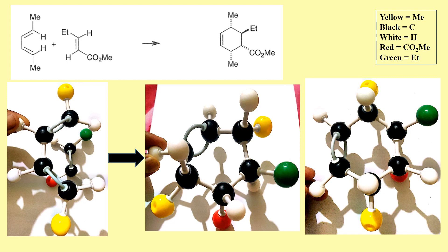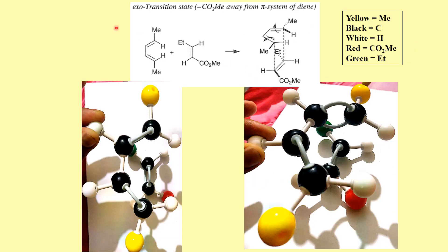Now let's see the exo addition. What is the difference in the exo transition state? In the exo transition state, the ester group is outside — this is how it has been placed and positioned. This is called the exo transition state. In this case, the ester group is not undergoing any sort of orbital overlap. We can clearly see the p-orbital here, but the ester group is here with no orbital overlap and no stabilization.